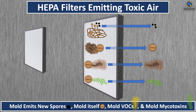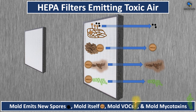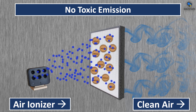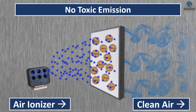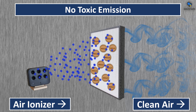HEPA filters can emit toxic air. Mold can emit newly formed spores, and when mold is attached to dust it can leave the filter and become airborne again. Mold also emits gaseous volatile organic compounds and mycotoxins — these are very small molecules that go right through the HEPA filter. Using an air ionizer before your HEPA filter will kill all biological matter including mold spores to ensure you always have clean air.